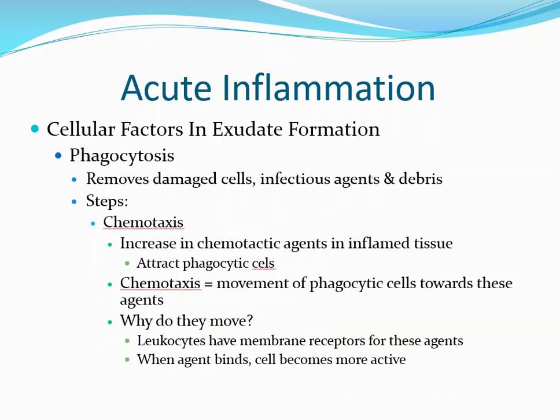Now that white cells are in the tissues, the next step is phagocytosis — removing damaged cells, infectious agents, immune complexes, and debris. The first step is chemotaxis. There is an increase in chemotactic agents in the inflamed tissue, attracting phagocytic cells that migrate toward them. Chemotaxis refers to movement of phagocytic cells toward a high concentration of these agents — chemo meaning chemical, taxis meaning movement. Leukocytes have membrane receptors for these agents, and once the agent binds, the cells become activated: larger, more active, with more destructive agents stored inside.